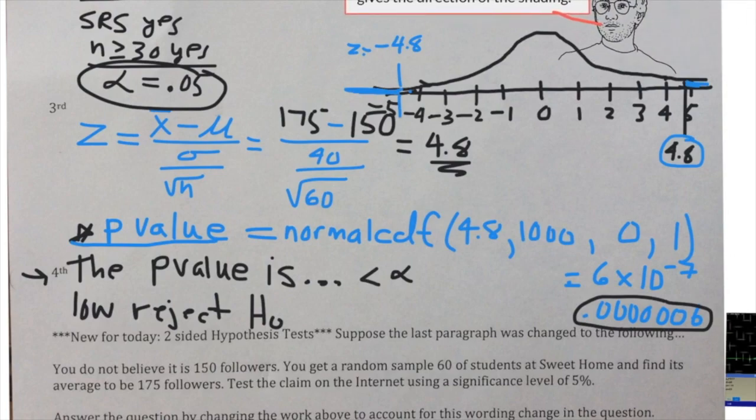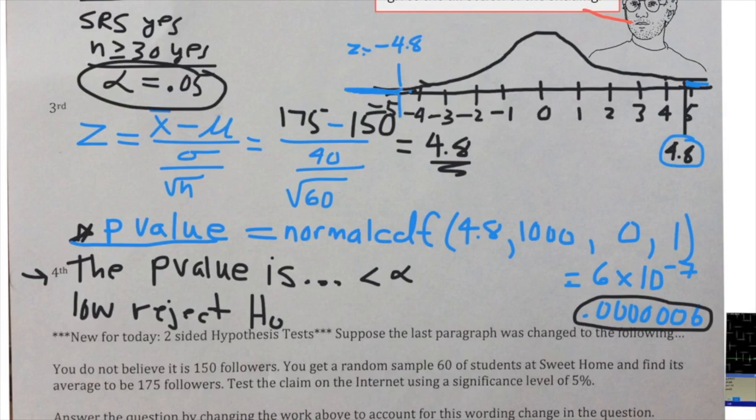Remember my little graphic here—it even looks like me. Remember that the inequality in the HA gives the direction of the shading. So if the HA said greater than, which it did originally, we're shading to the right. If the HA said less than, we would shade to the left. In this two-sided test, the HA says not equal to, so we shade to the left and to the right.